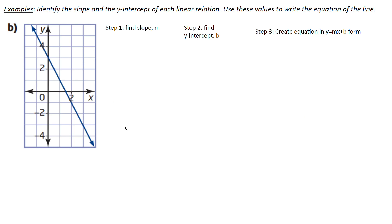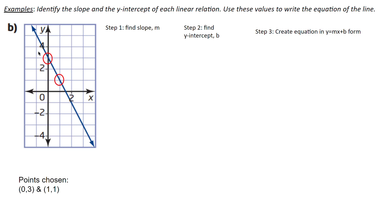For this next question, pause and try to figure out the slope of the line by yourself. To find the slope, we want to pick two points on the line. The thing about lines is that no matter where you are, the ratio of rise over run is always going to be the same.